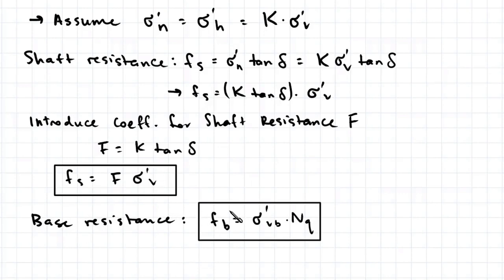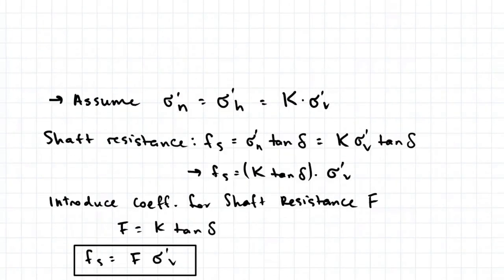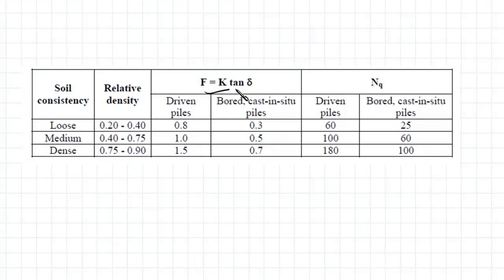The base resistance Fb is equal to the overburden pressure multiplied by Nq. Both F and Nq are determined from this table, provided you know the soil consistency and the classification of the pile. In the next video, we'll do an example on the axial capacity of a pile. Hope this helps guys.